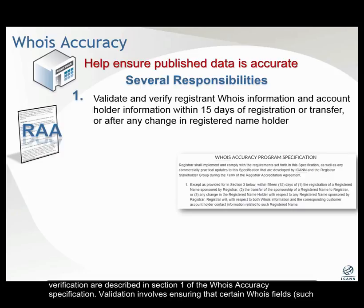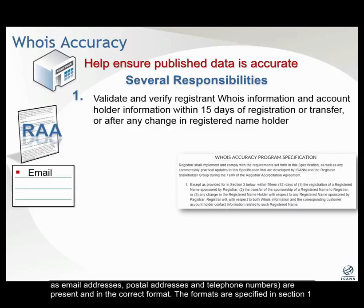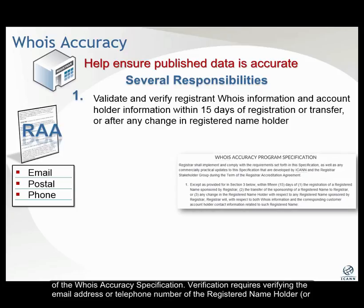Validation involves ensuring that certain WHOIS fields, such as email addresses, postal addresses, and telephone numbers, are present and in the correct format. The formats are specified in Section 1 of the WHOIS accuracy specification.